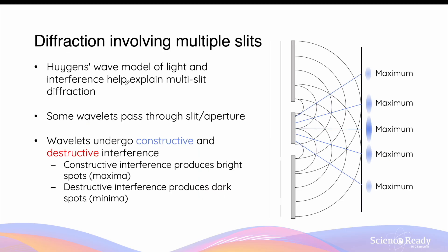Huygens' wave model of light and the properties of interference help explain diffraction due to multiple slits. For example, in an experiment using two slits, the wavelets that emerge from them will superimpose and undergo interference. At the viewing screen, the maxima are formed as a result of constructive interference between the wavelets, and the minima are formed due to destructive interference between the wavelets.